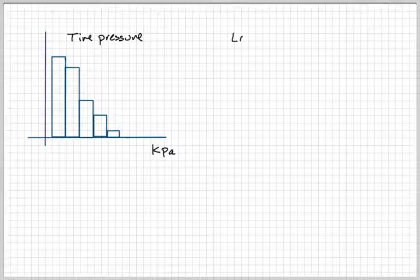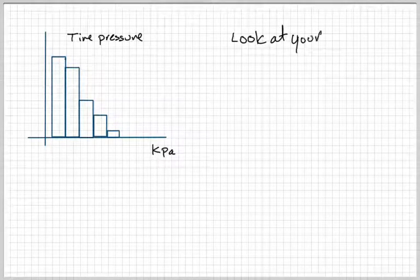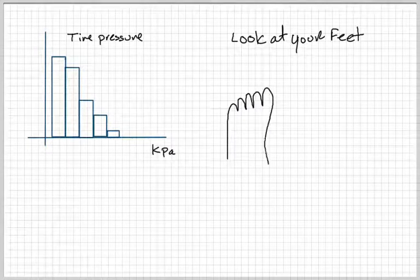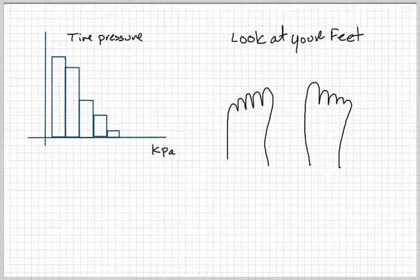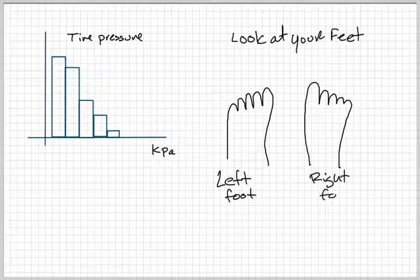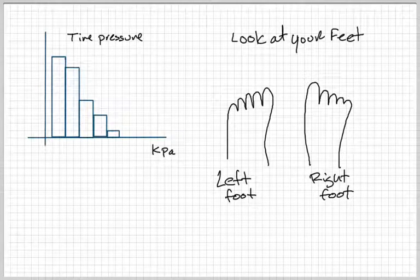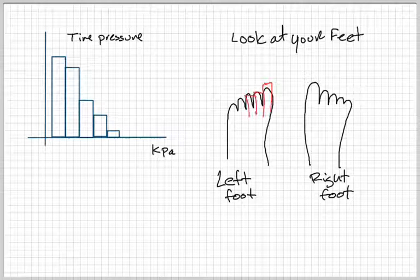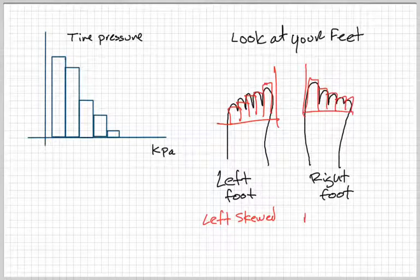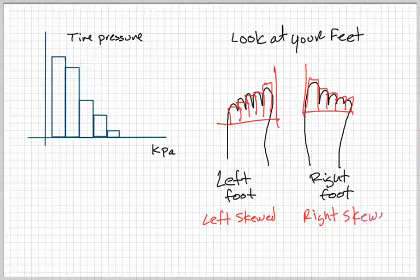Well, one way to look at this is to look at your feet. Yes, your feet. So you have a left foot and a right foot, right? So if you look at your left foot very carefully, that could be like a histogram that's left skewed. On your left foot, on your right foot, on your toe being the tallest.